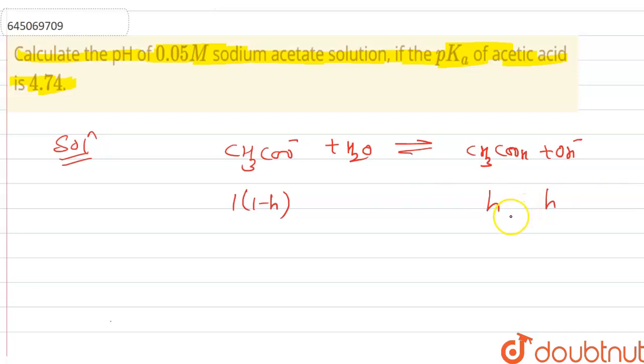So we can say that h is the degree of hydrolysis of sodium acetate. Also pKa is given here, 4.74. Okay, so Ka is equal to 1.82 × 10⁻⁵ from the formula of minus log of Ka.